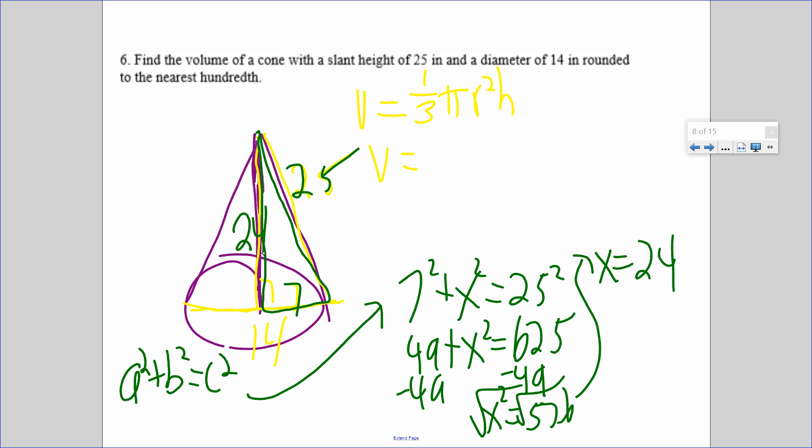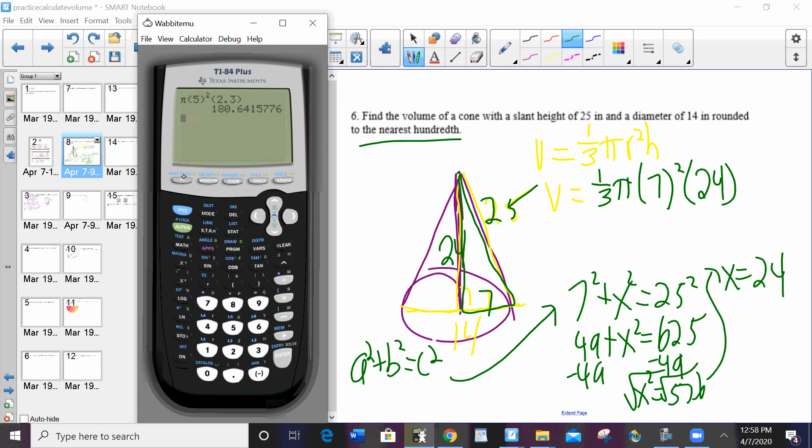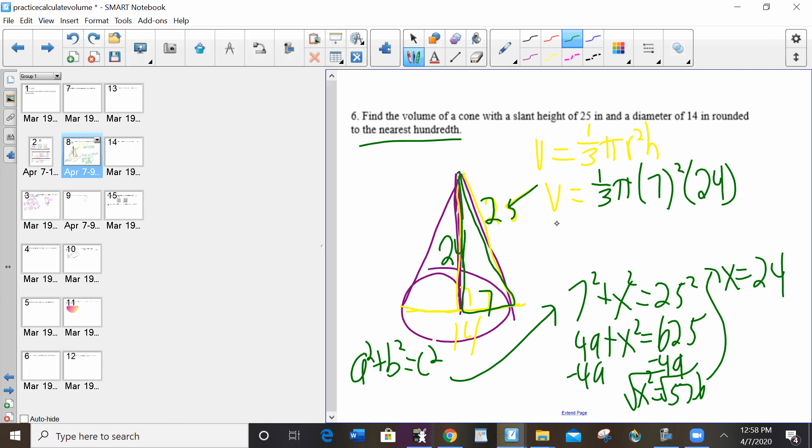So now, one-third pi, the radius is 7. The height is not 25, but it's 24. It wants me to round to the nearest hundredth. So I am going to type pi into the calculator. One-third pi, 7 squared, 24 to the nearest hundredth, 1231.50 cubic inches.